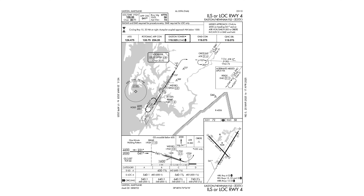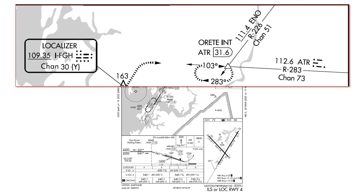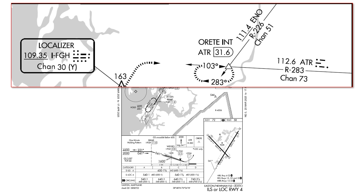The last point concerns missed approaches. Here's the ILS at Easton, Maryland. When briefing an approach that uses NAVAIDs like this, we want to make sure we've got all the needed frequencies dialed in. First, we have the localizer frequency for the ILS: 109.35 — this is all we need to shoot the approach. Looking at the missed approach procedure, we need to intercept the 283 radial from the ATR VOR to the ARIT intersection, so we need to dial ATR on 112.6. The ARIT intersection is the 31.6 DME from ATR, but if we don't have DME or a suitable GPS substitute, we'll need to use a cross radial from another VOR, ENO, on 111.4. It's easy to miss this third NAVAID, but it's crucial if you're shooting the approach using just minimum equipment.